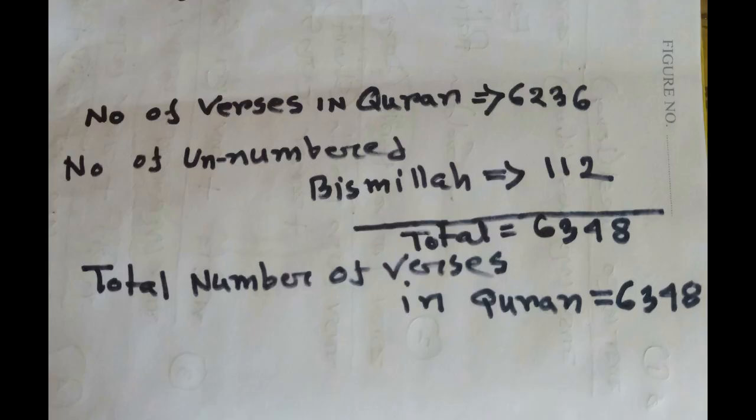In the case of Bismillah, since they have no chapter number, they should have an average mathematical value. The number of verses in the Quran is 6236, and the number of unnumbered Bismillah is 112, giving a total of 6348 verses. The mathematical value of these 6348 verses is 114, which is the number of chapters in the Quran.